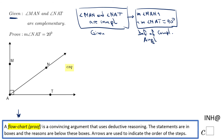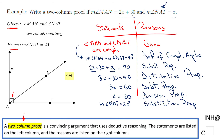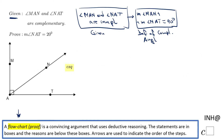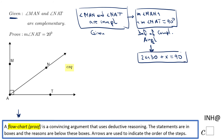My next step is to replace these angle measurements with the given expressions from the problem — 2x plus 30 for angle MAN and x for angle NAT — giving us 2x plus 30 plus x equals 90. That will be my next box, which results from the previous one by the substitution property of equality. Now I'll combine like terms: 2x plus x gives 3x plus 30 equals 90.